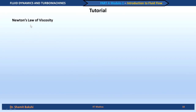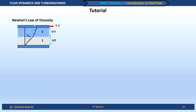The first problem is on Newton's law of viscosity. The problem setup has two plates — a bottom plate and a top plate — with two fluids, fluid 1 and fluid 2. The top plate is moved using a force F at a velocity U, and the height of the first fluid layer is H/2, with the remaining gap also H/2.